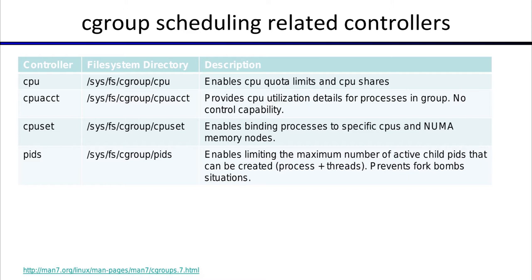The CPU controller limits CPU quota, and there is also a CPU shares model. The cpuacct controller is purely an accounting controller providing extensive CPU utilization data. The cpuset controller sets processes to run only on certain CPUs rather than all. The PID controller limits the maximum number of child PIDs that can be created, preventing fork bomb situations where code accidentally loops creating child processes.